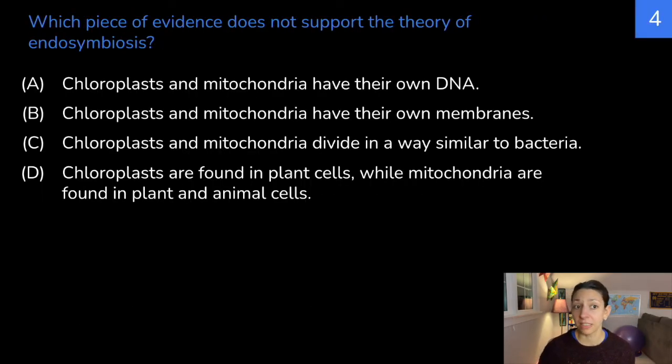Which piece of evidence does not support the theory of endosymbiosis? A, chloroplasts and mitochondria have their own DNA. B, chloroplasts and mitochondria have their own membranes. C, chloroplasts and mitochondria divide in a way similar to bacteria. Or D, chloroplasts are found in plant cells, while mitochondria are found in plant and animal cells. Think about it.